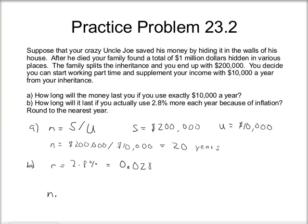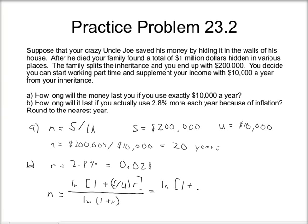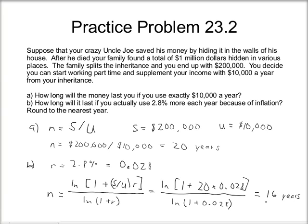For the exponential reserve problem, N is equal to the natural log of (1 plus S divided by U times R), divided by the natural log of (1 plus R). Filling in the numbers: S divided by U is 20, and R is 0.028, so it's the natural log of (1 plus 20 times 0.028), divided by the natural log of (1 plus 0.028). Putting that into a calculator and rounding to the nearest year gives 16 years. So it only lasts 16 years if you're using 2.8% more each year because of inflation.